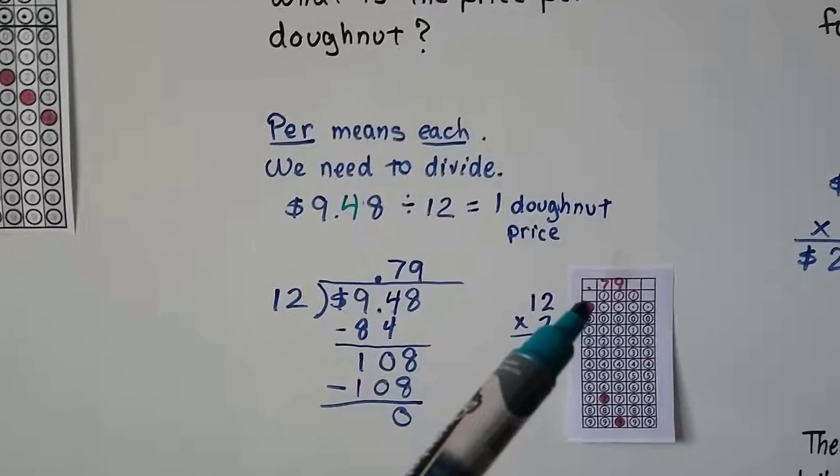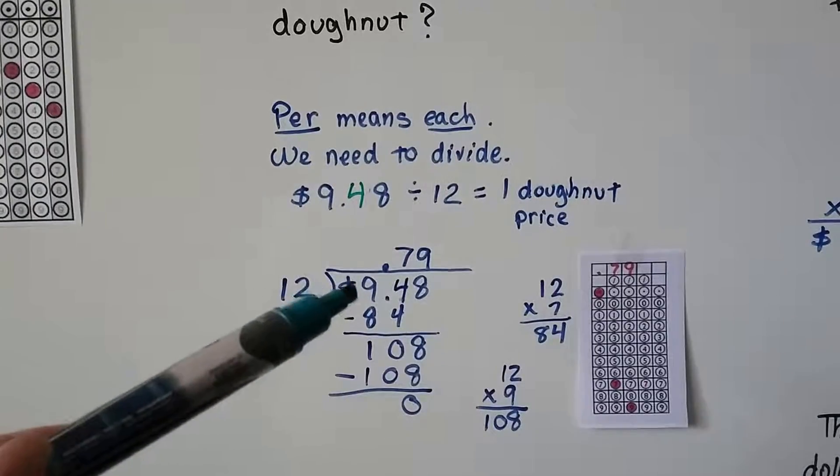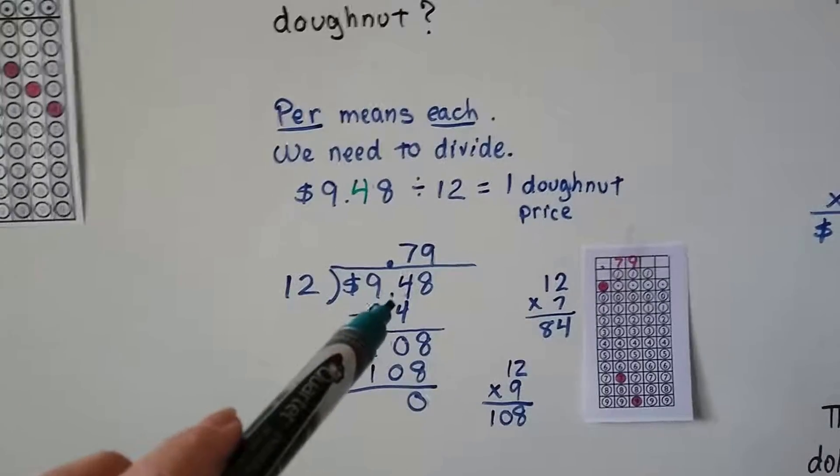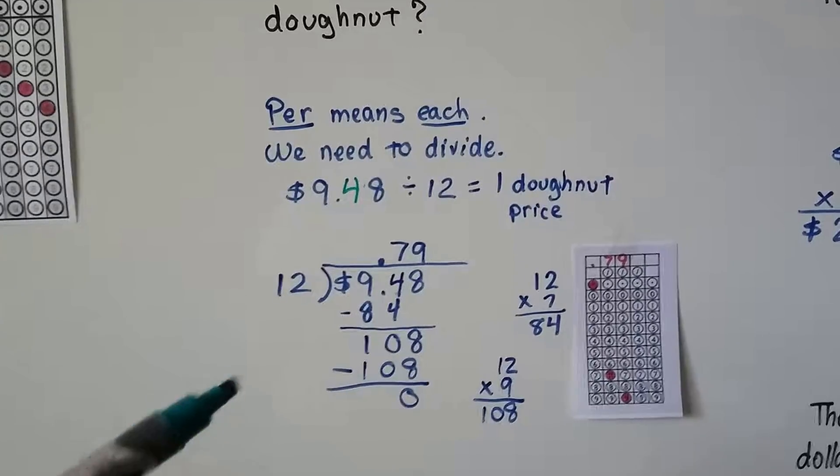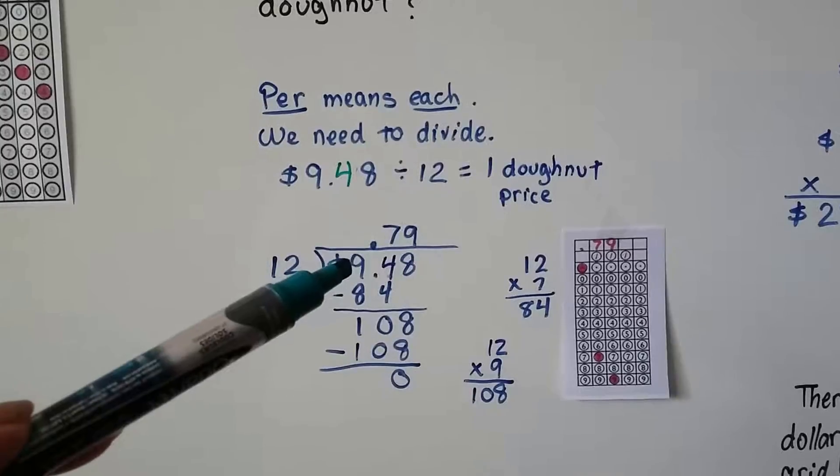Then you can write in your answer. If you don't have the calculator, just do $9.48 divided by 12 long division and we put the decimal point straight up from where it is and we just pretend it's not there as we're doing the division. We would say 12 goes into 94 because it can't go into 9.